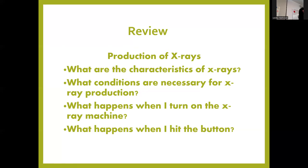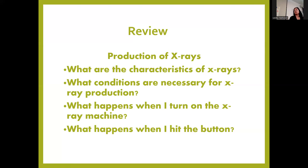What conditions are necessary for X-ray production? We need focusing, the electron source, the high voltage, and then the abrupt stoppage — something to stop them. When you turn the X-ray machine on, the first thing that happens is thermionic emission: the electron cloud starts forming around the tungsten filament. Then when you actually hit the exposure button, you get that high voltage and you're accelerating the electrons across.